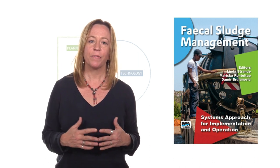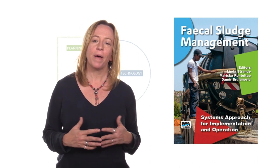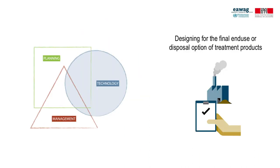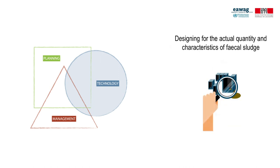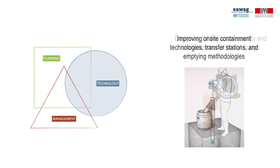Some important aspects for the way forward that you learned about in this course include designing for the final end-use or disposal option of treatment products to ensure treatment objectives are met and public health is protected, designing for the actual quantity and characteristics of fecal sludge to ensure designs meet the local context, improving on-site containment technologies, transfer stations, and emptying methodologies. A safe, efficient, and affordable collection and transport will help to ensure that fecal sludge is delivered to treatment.